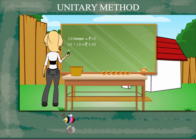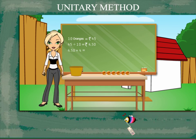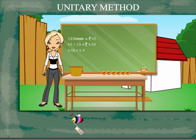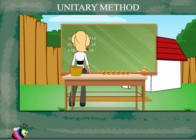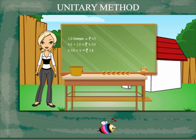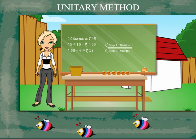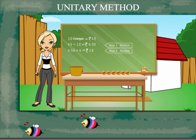This is rupees 18. Rosimam explains that this is called the unitary method. Step 1 is to divide, and step 2 is to multiply. The student responds: "That was simple, ma'am!"